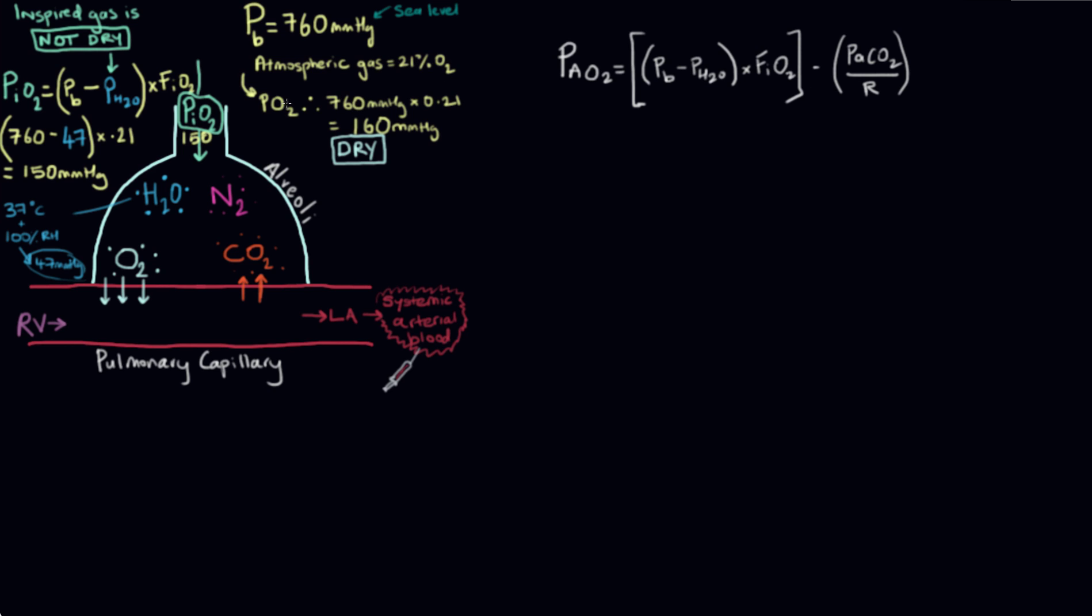So the atmospheric partial pressure of oxygen is the total pressure multiplied by the fraction that oxygen makes up of that gas, which is 21 percent. So 760 times 21 percent is 160 millimeters of mercury. Of that 760 millimeters of mercury of pressure, oxygen is responsible for 160 millimeters of mercury. That is the situation in a dry gas.